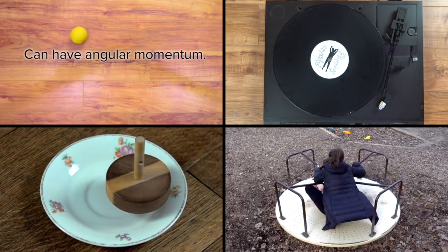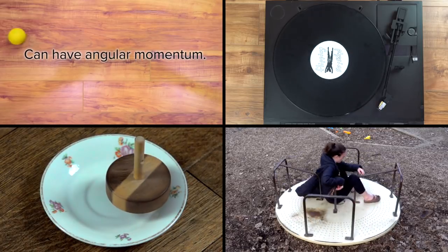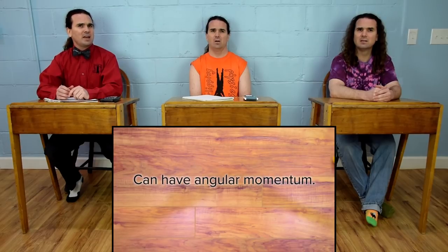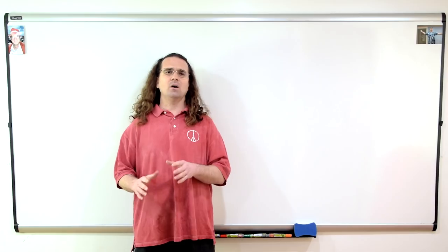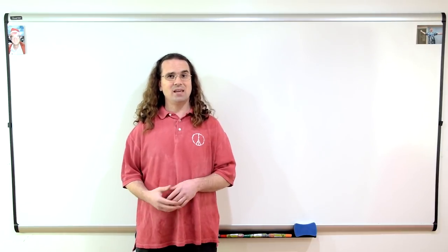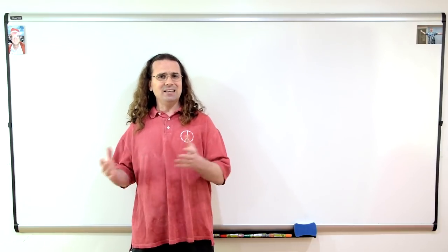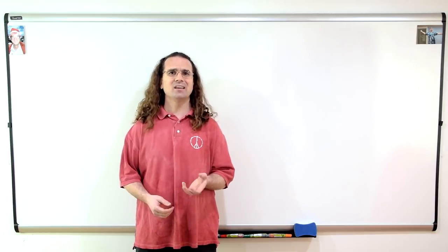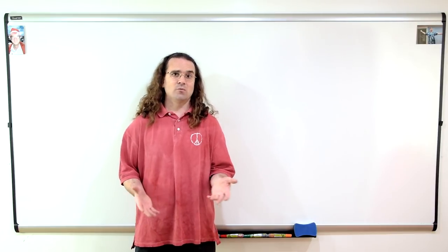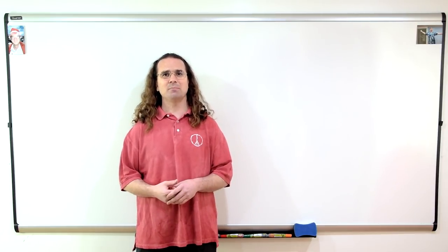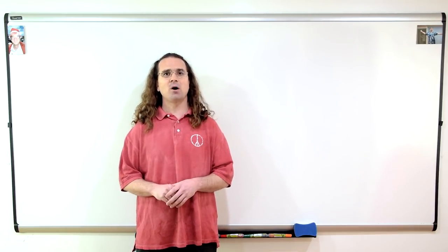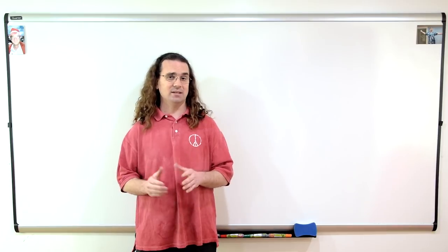How can an object moving in a straight line have angular momentum? If it's not rotating, how does it have angular momentum? Well, the ball is rotating as it rolls. The ideal examples of this typically have a point particle moving at a constant velocity, which is difficult to do in the real world without having the object be a rolling sphere. So realize I am talking about the angular momentum of the ball as it moves in a straight line.